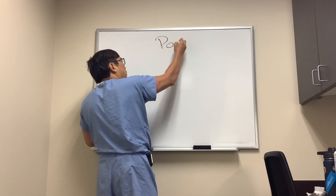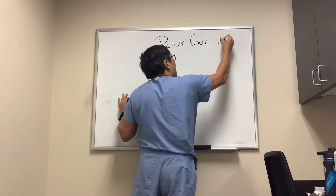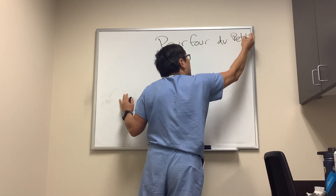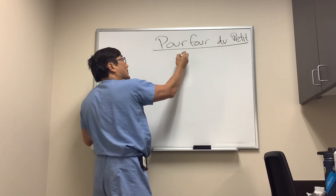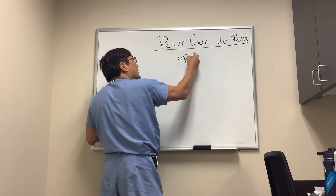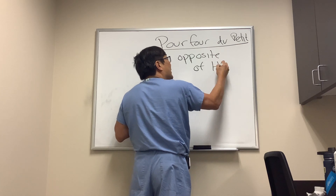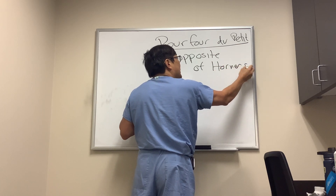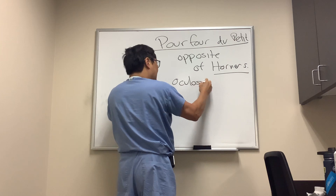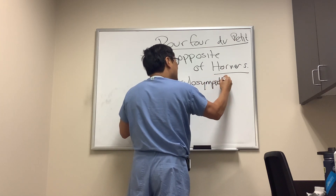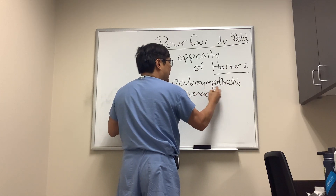Pourfour du Petit is like the opposite of a Horner syndrome. So instead of a Horner syndrome, which is an oculosympathetic paresis, it's overaction of the sympathetics.